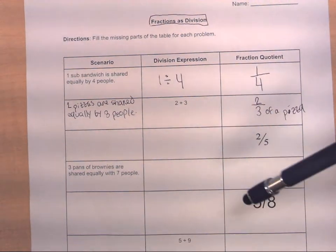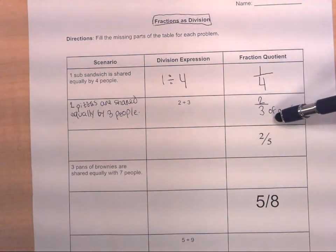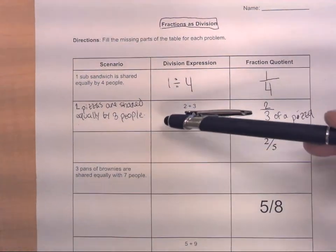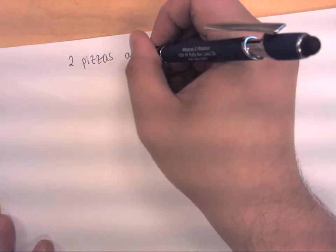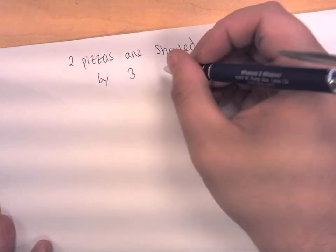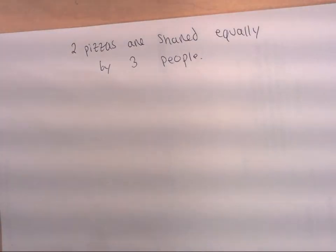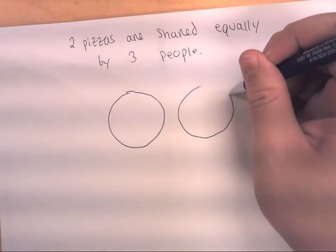I ask students to use a picture to prove it — drawing a diagram to model the situation really helps students see that two-thirds is the amount each person would receive if two pizzas were shared equally. I'm going to draw a model on the back of this paper. The situation is two pizzas are shared equally by three people. Since circles are easier to divide into three equal sections, and we're talking about pizzas, I'll draw the pizzas as circles.